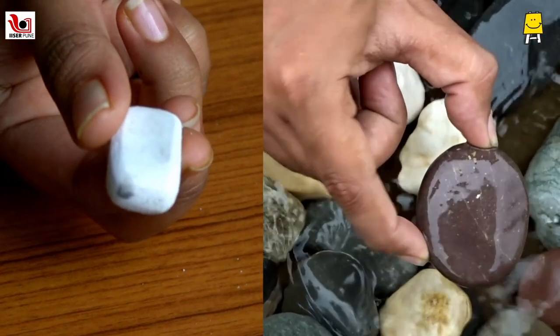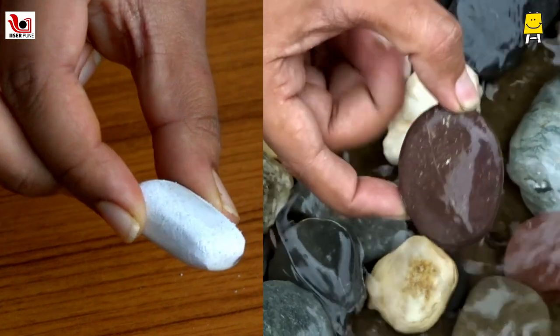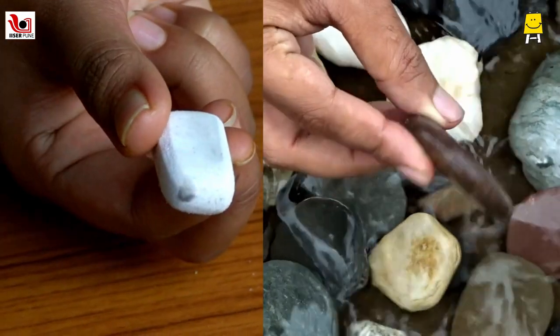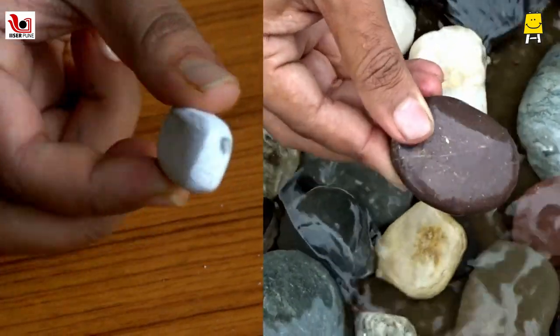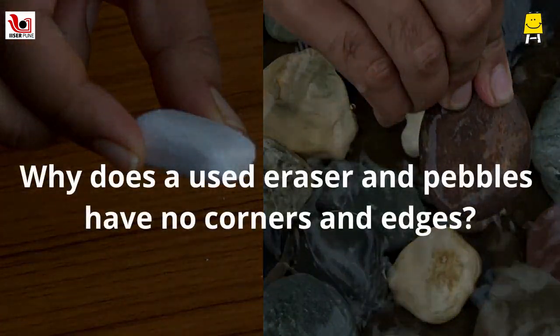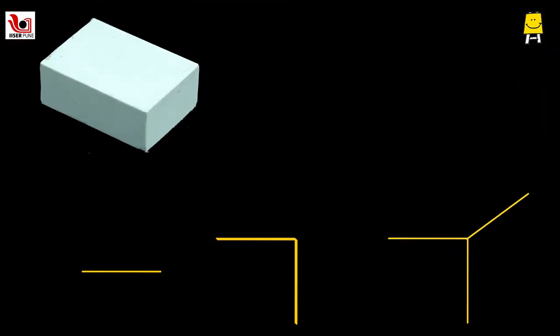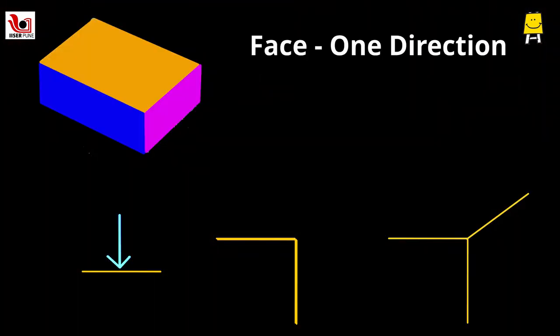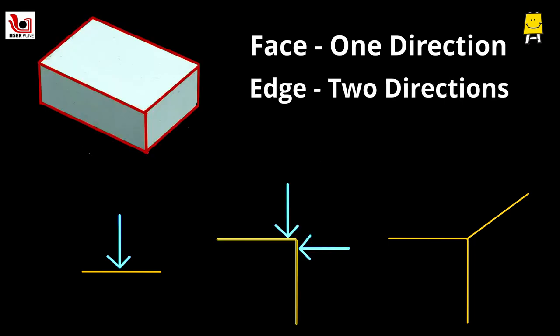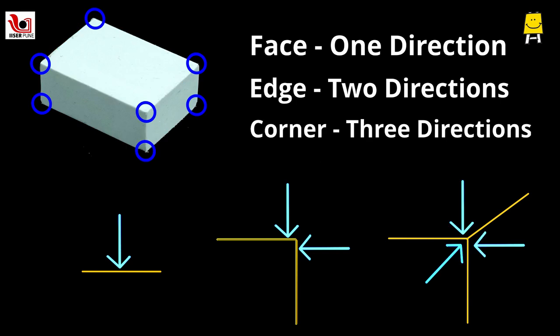But a used eraser and a pebble have no corners or edges. How? Friction acts only in one direction at a face, whereas in two directions at an edge and in three directions at corners.